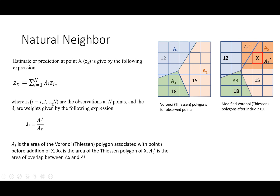So this is how natural neighbor works. As opposed to inverse distance weighting where weights are calculated based on distances, in natural neighbor weights are calculated based on areas estimated using Thiessen polygons before and after the addition of point x.